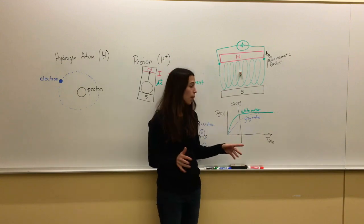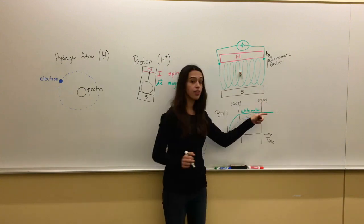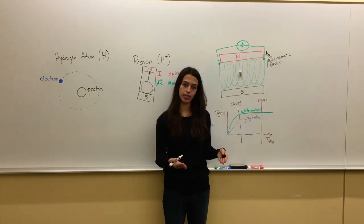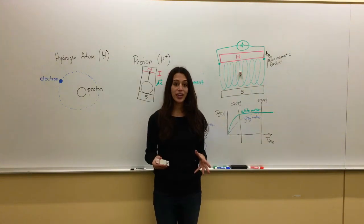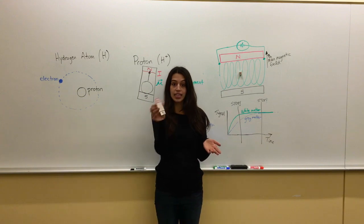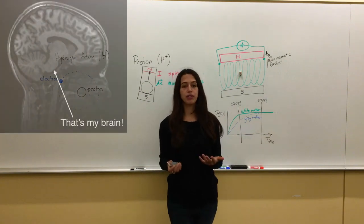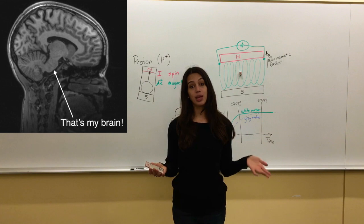Now if we said stop further over here, then we wouldn't see as much difference between the white and gray matter because their signals are pretty much at the same level. So how quickly these different protons rise up has to do with the different shades of gray that we see in an MRI image.